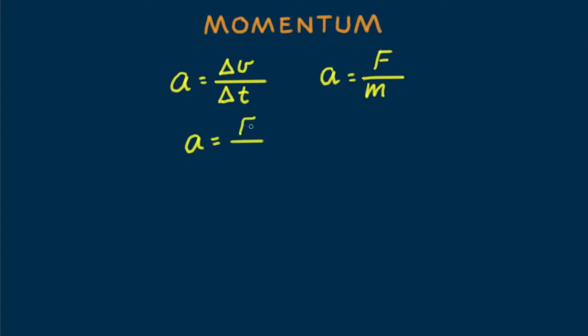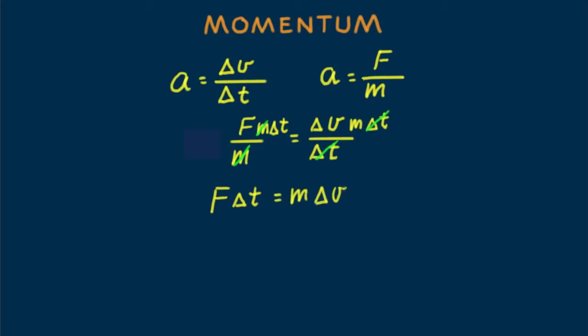Let's equate the two acceleration equations. Multiplying both sides by m delta t, we get f delta t equals m delta v. Or we can say f delta t equals delta mv, which happens to be an intriguing relationship.